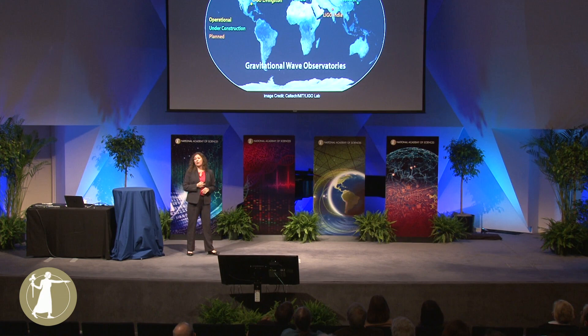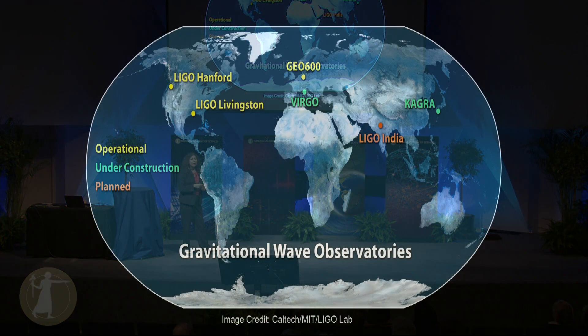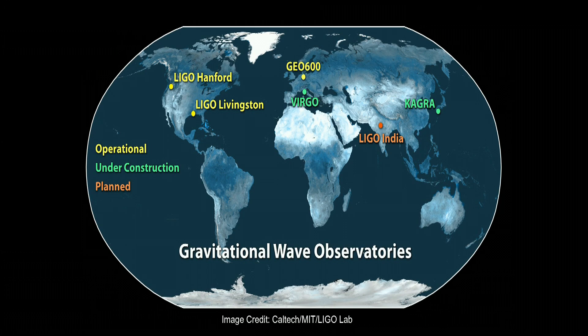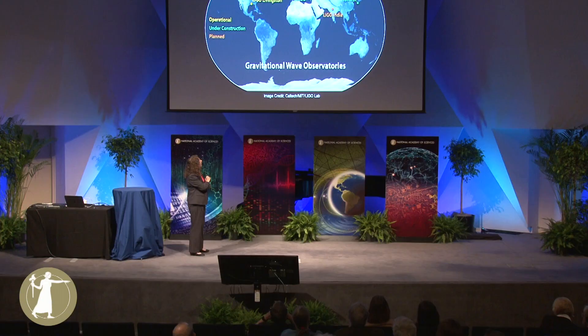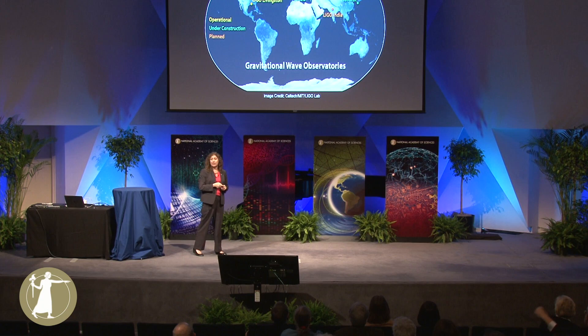This was not happening only in the US — it was happening all over the world. There were the LIGO detectors in the US. In Europe there were two projects: a British-German project called GEO and a French-Italian project called Virgo. Virgo has a different collaboration but we learned to work together. Even though these projects started independently and perhaps a bit competing, in the end we knew that together we were going to be stronger. There are also two other detectors in construction: one in Japan, one in India. This is a worldwide effort.